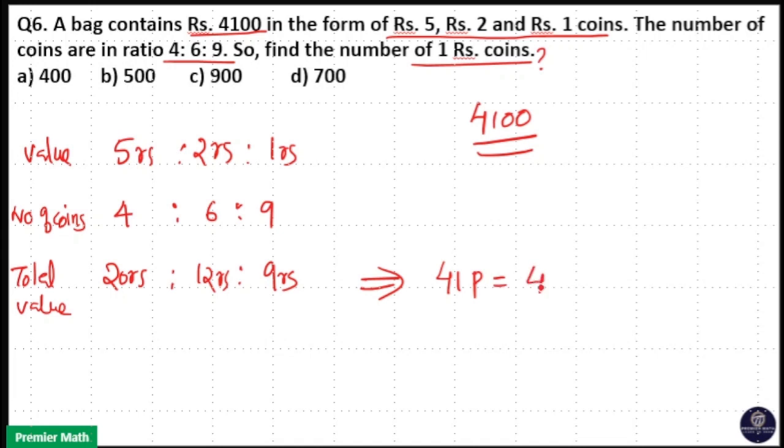So 41 parts is equal to 4,100. That means 1 part is equal to 100. So the number of 1 rupee coins is equal to 9 parts. So 9 parts is equal to 900. So your answer is option C.